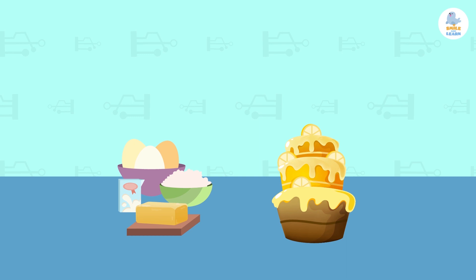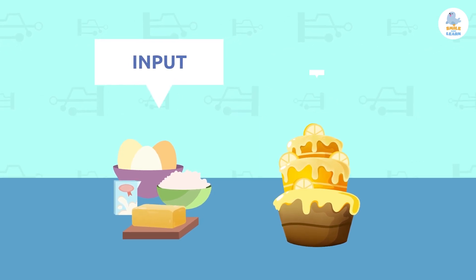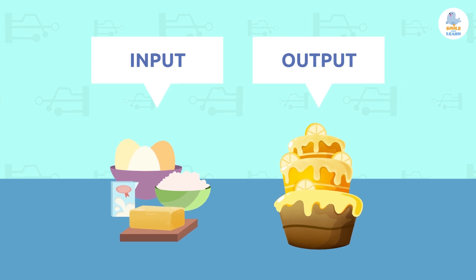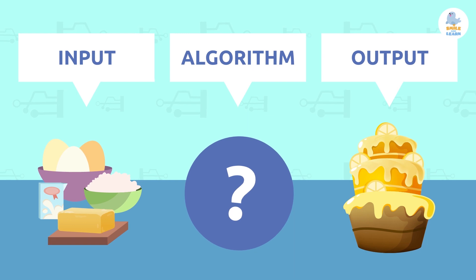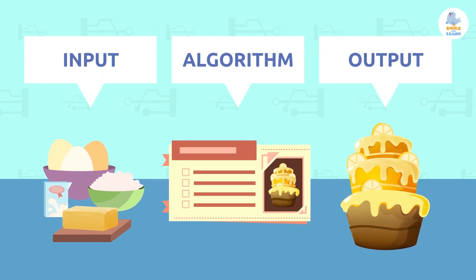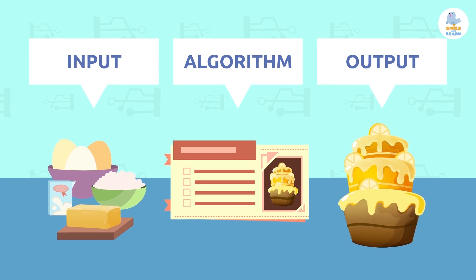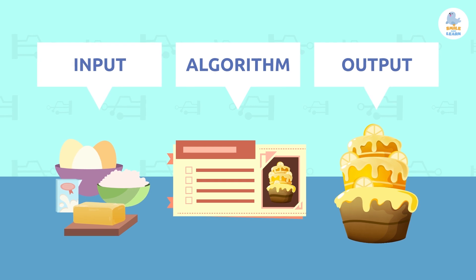For example, when we bake, the input is the ingredients and the output is the baked cake. Can you guess what the algorithm would be? I told you before - exactly, the algorithm would be the recipe itself, since it's a sequence of steps required to turn the ingredients into a delicious dish.